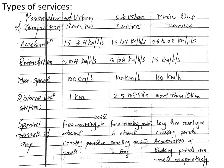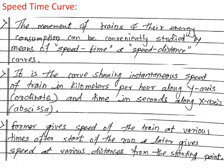Usual values for acceleration for different services are: goods service, 0.21 to 0.29 km/h/s; parcel service, 0.35 to 0.53 km/h/s; passenger service, 0.53 to 1.08 km/h/s; suburban service, 1.08 to 2.16 km/h/s; and urban service, 2.16 to 3.16 km/h/s.